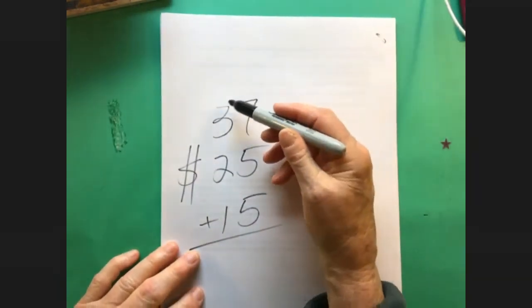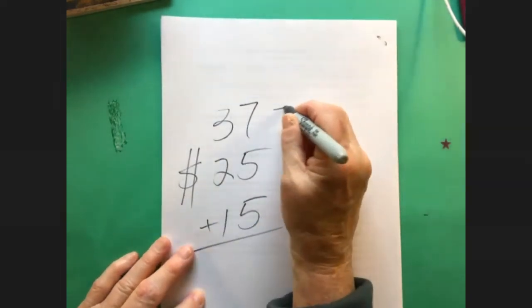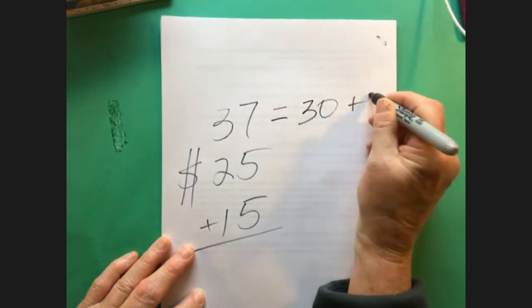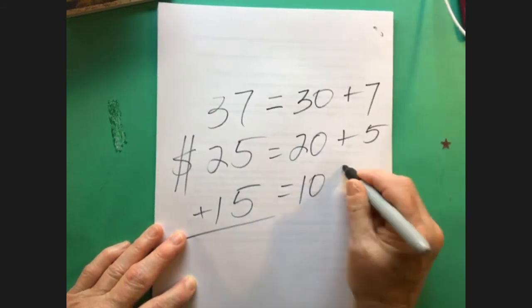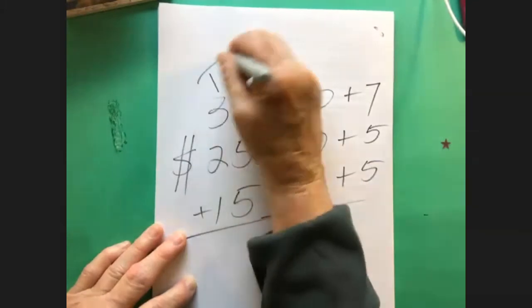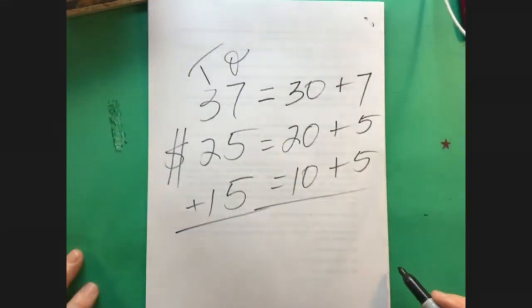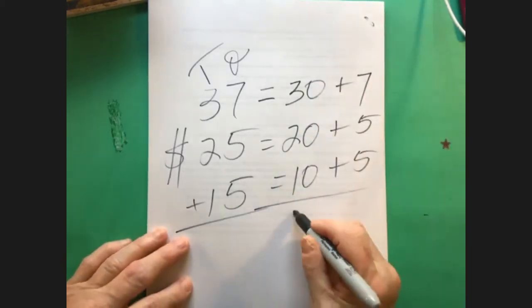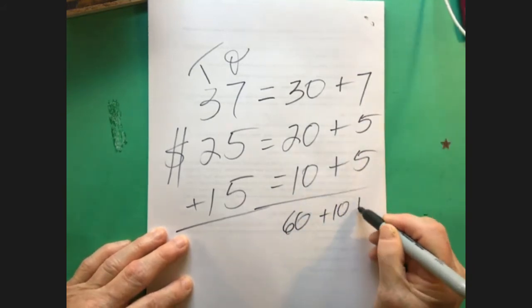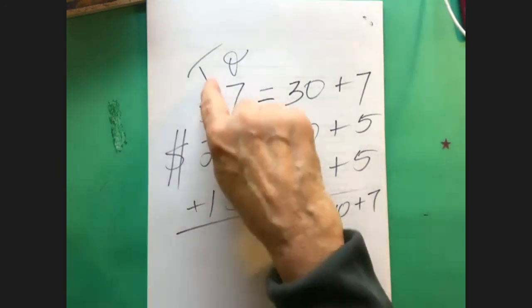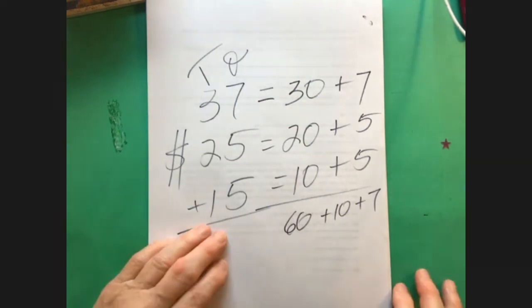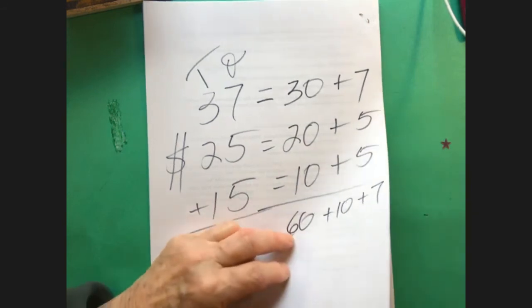This is real life. And then I'll say well why didn't you start with the bigger bills here? Because if you think about this, this is 30 plus 7, this is 20 plus 5, and this is 10 plus 5. Here's our 10s, here's our ones. Now we teach kids to count by 10s but we never let them use it. So here you go, here's 60, here's another 10.